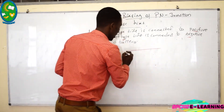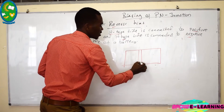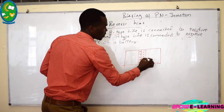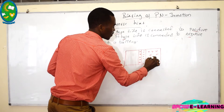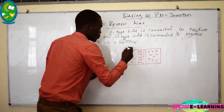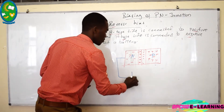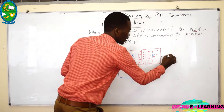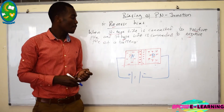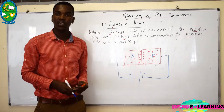In a reverse biased P-N junction, if we have a P-N junction where this is the N-type and this is the P-type, then the positive terminal is connected to the N-type side and the negative terminal is connected to the P-type side. This kind of bias is known as reverse bias.